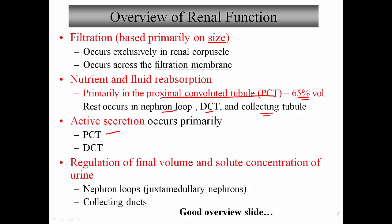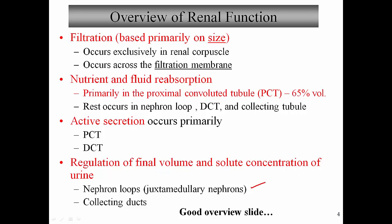Secretion occurs in the proximal convoluted tubule, but primarily in the distal convoluted tubule. Regulation of the final volume and solute concentration of urine is set up in the juxtamedullary nephron loops but finalized within the collecting ducts. This overview slide is a great summary of what the individual parts of the nephron and collecting ducts do — come back to this when you want an overall summary.